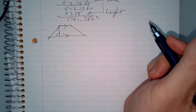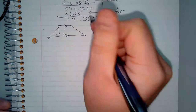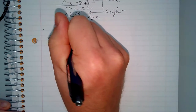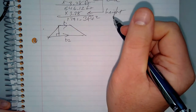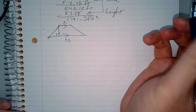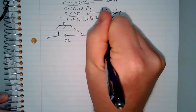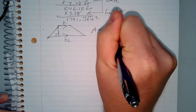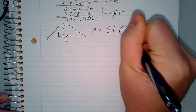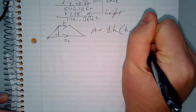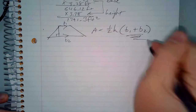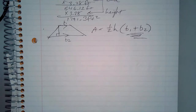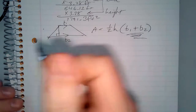We call one parallel side base one and the other base two. The height must be 90 degrees — perpendicular to the base. Area equals one-half times the height times (base one plus base two). That plus sign is important. Let's do some practice problems — find the area of each trapezoid.